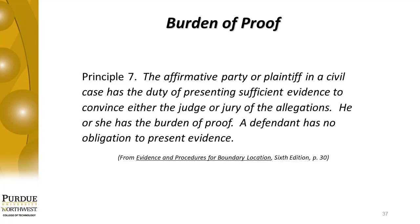Principle 7 says that the affirmative party or plaintiff in a civil case has the duty of presenting sufficient evidence to convince either the judge or jury of the allegations — he or she has the burden of proof. A defendant has no obligation to present evidence. The burden of proof lies with the party who wishes to prove the fact. The individual wishing to prove his or her title has that burden and cannot rely on the weakness of the other person's title. However, this burden can shift under certain circumstances — the individual who seeks an affirmative defense or who seeks a counterclaim has the burden shifted.